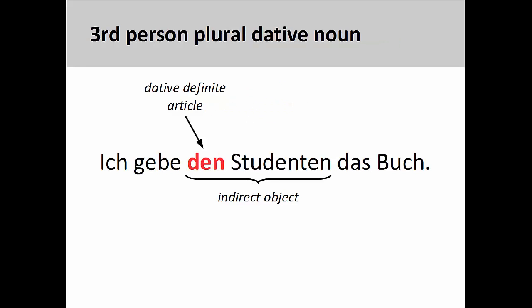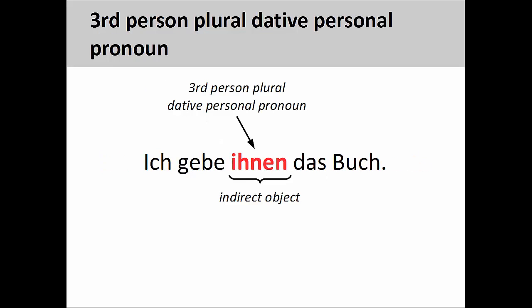The same thing holds with third-person plural nouns. As you see in this sentence, ich gebe den Studenten das Buch — I give the book to the students — the noun phrase den Studenten would be replaced by the third-person plural dative personal pronoun ihnen. Note here that the first letter in ihnen is not capitalized.